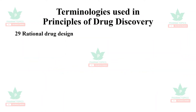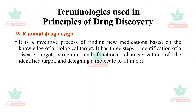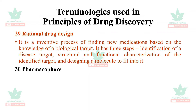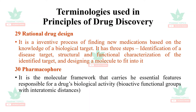Rational drug design: it is an inventive process of finding new medications based on the knowledge of the biological target. It has three steps: identification of the disease target, structural and functional characterization of the identified target, and designing a molecule to fit into it. Pharmacophore is the molecular framework that carries the essential features responsible for a drug's biological activity — bioactive functional groups with interatomic distances are called pharmacophores.